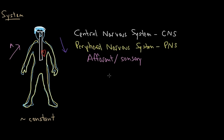Once the signal has been processed by the CNS, we have a signal that goes out by the efferent, or motor, component. So we have the CNS, the central nervous system, which is the brain and the spinal cord, and the peripheral nervous system, or PNS.